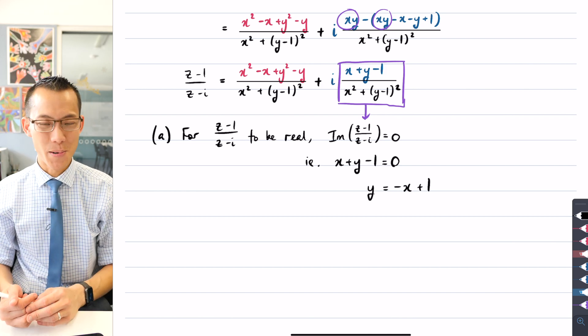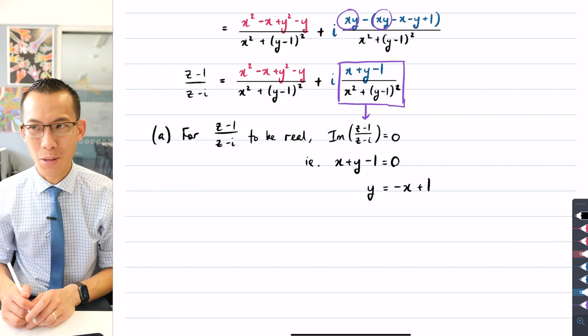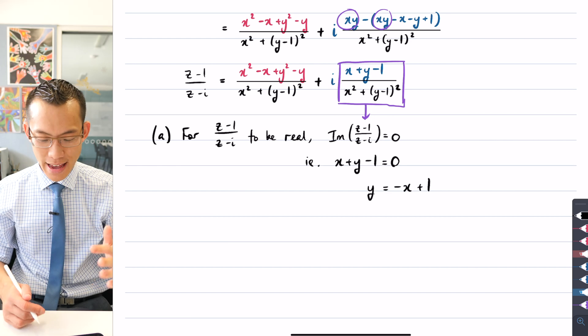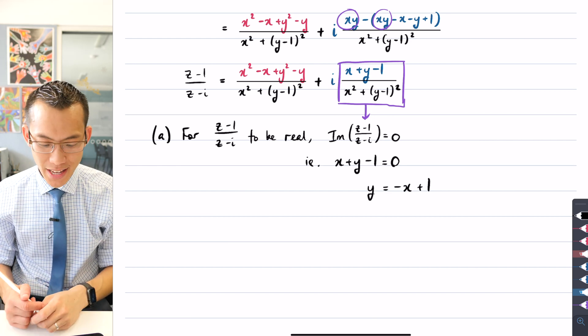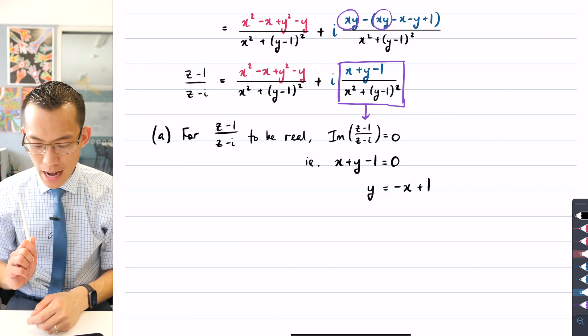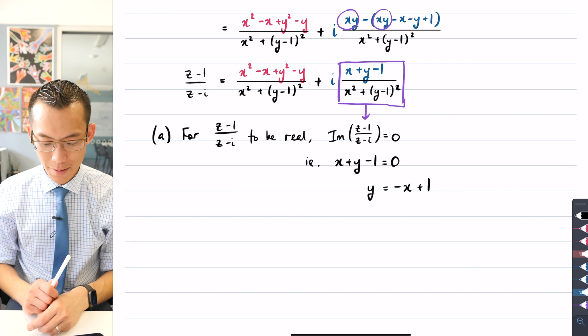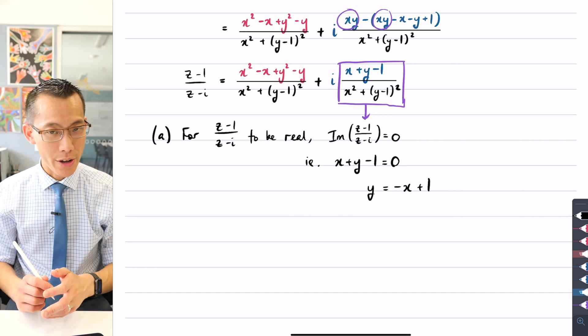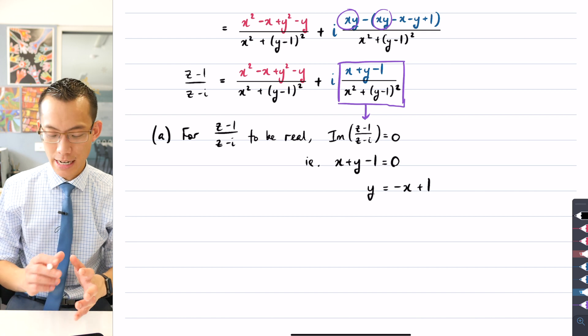I would subtract x add 1, and amazingly, I get this very simple shape. It's just a straight line with a gradient of negative 1 and a y-intercept of 1. Now this looks really good, but there's a bit of a problem.